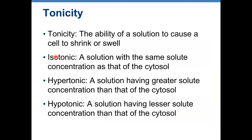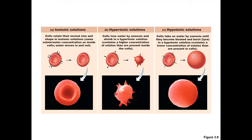Isotonic is a solution with the same solute concentration as the cytosol of a cell. Hypertonic is a solution having a greater solute concentration than the cytosol of a cell. Hypotonic is a solution having lesser solute concentration than that of the cytosol of a cell. This has important application in physiology: if a patient's blood plasma is hypertonic or hypotonic relative to the cytosol of blood cells, the cells can be damaged and die.